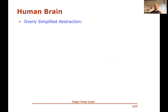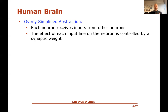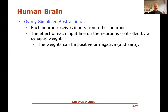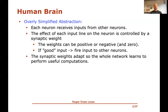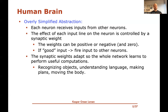A really simple abstraction of what a neuron is doing: each neuron receives inputs from other neurons, and the effect of each of these input lines is controlled by a synaptic weight. The weights can be positive, negative, or zero. The basic idea is that if enough input is given — you multiply these synaptic weights onto the signal — and if enough input is given, then the neuron is going to fire a signal along the output edges to the nearby neurons it connects to. These synaptic weights are what changes throughout your lifetime, and they adapt so that the network — your brain — can learn to perform useful computations, such as recognizing objects, understanding language, making plans, moving your body, and so on.